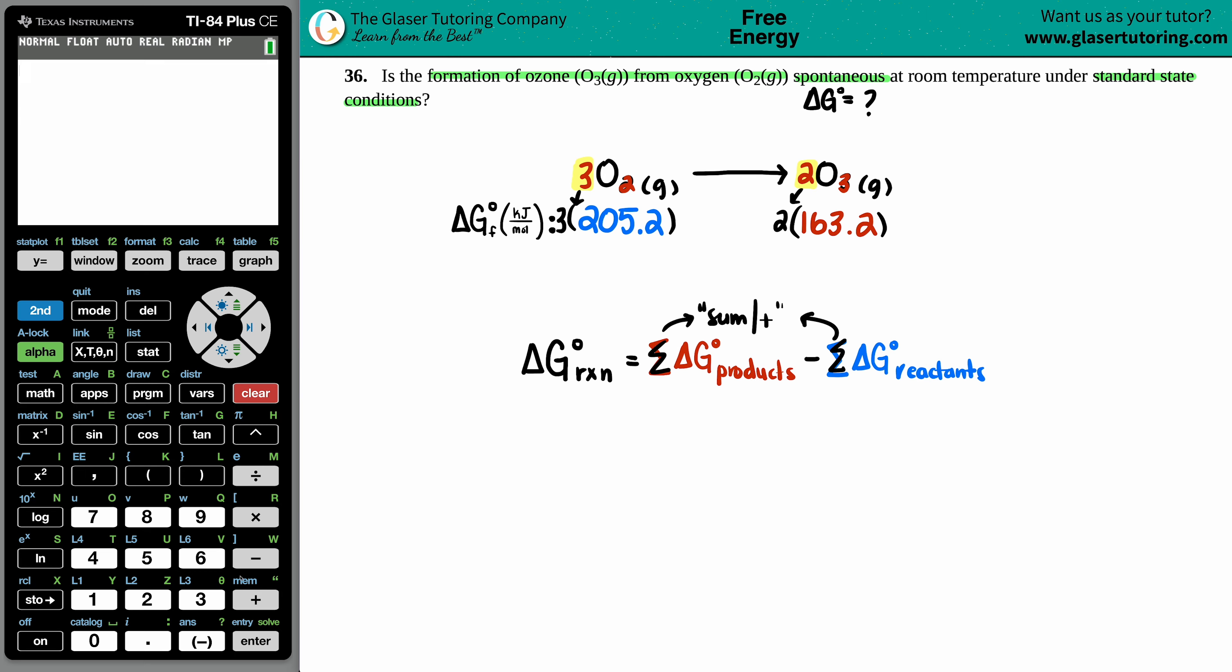So let's do that first. Calc time, three times 205.2. I get 615.6. And for my O3, I have two times 163.2. And that is 326.4.